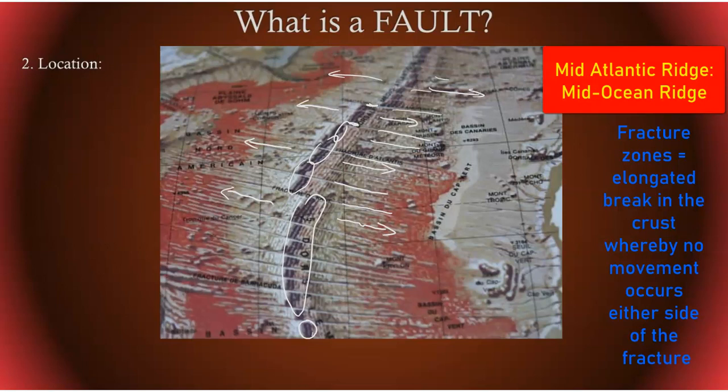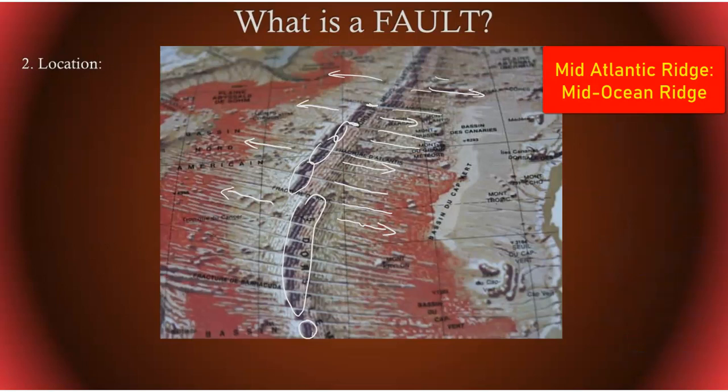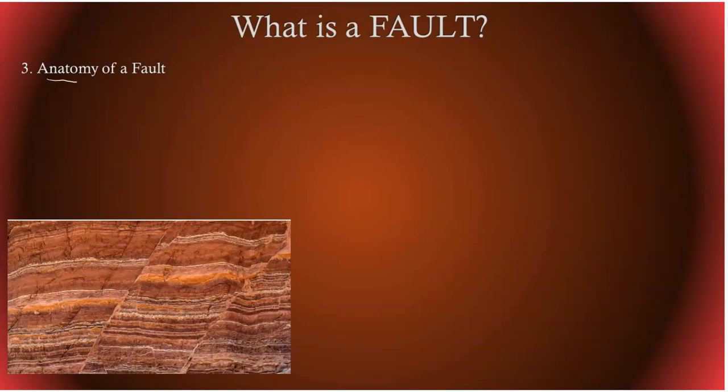They extend parallel and also perpendicular to the spreading center all along the ocean floor all around the ridge system. So you can get very large fault systems and also very small intricate fault systems in between each boundary and around the boundary. So before we get into the anatomy, let's just basically give a description of what a fault is.